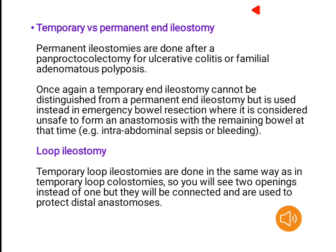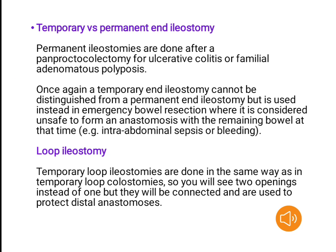Temporary versus permanent end ileostomy. Permanent ileostomies are done after a panproctocolectomy for ulcerative colitis or familial adenomatous polyposis. A temporary end ileostomy cannot be distinguished from a permanent end ileostomy but is used instead in emergency bowel resection where it is considered unsafe to form an anastomosis with the remaining bowel at that time — for example, intra-abdominal sepsis or bleeding.